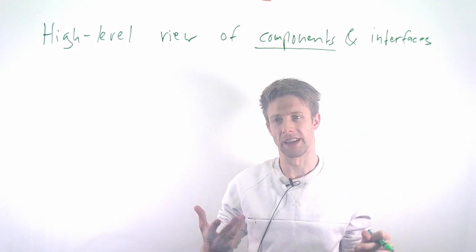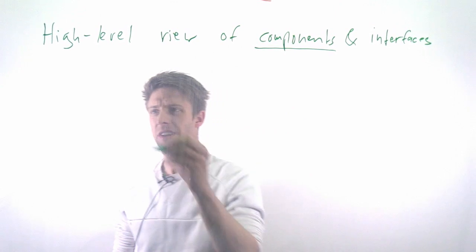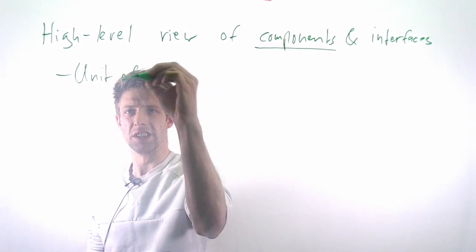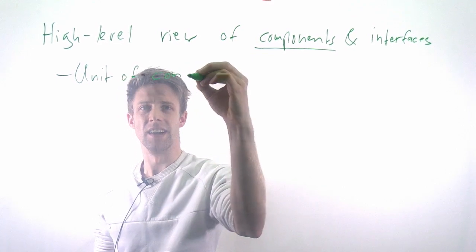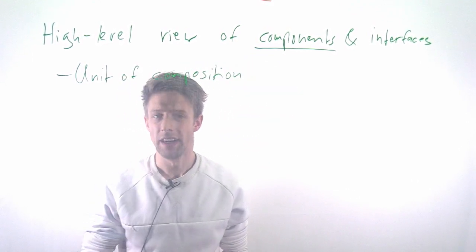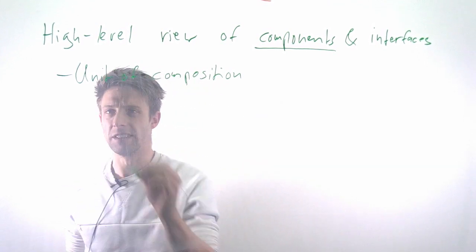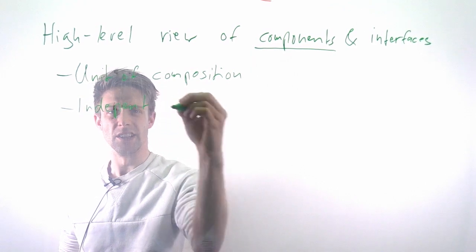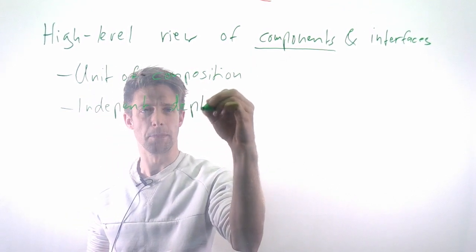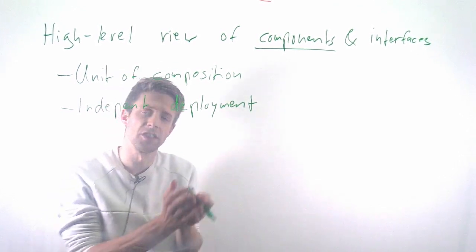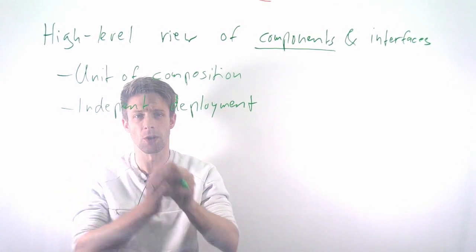One of the first questions you might ask is what actually is a component. In general, a component is some kind of unit of composition, a piece that you can use to compose your system. Another important aspect is that you should be able to deploy a component independently, so it should be a piece of your system that can be deployed or started without the other parts.